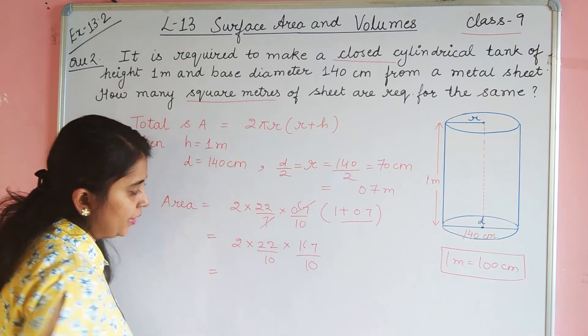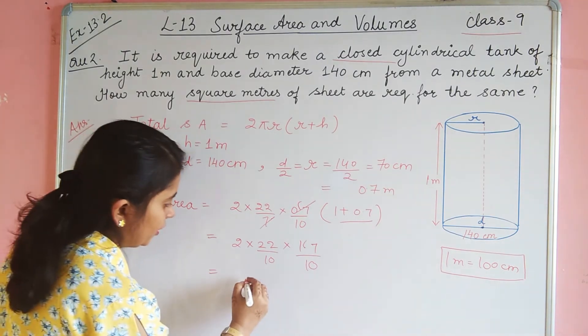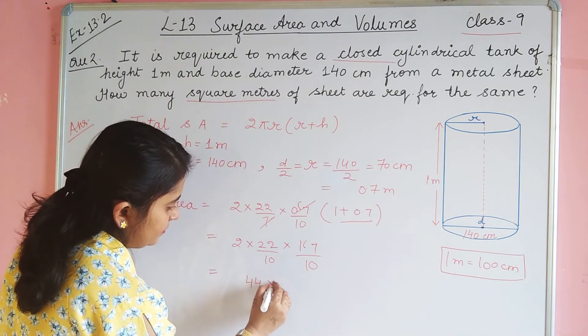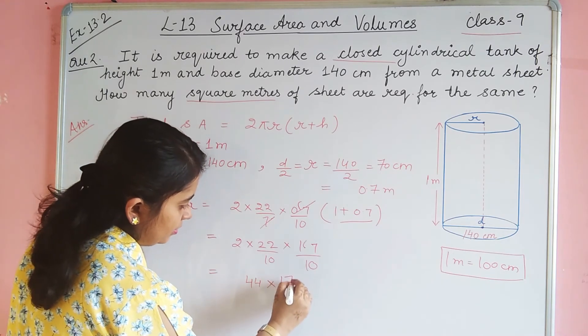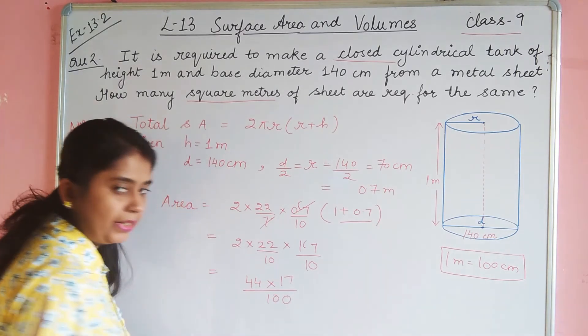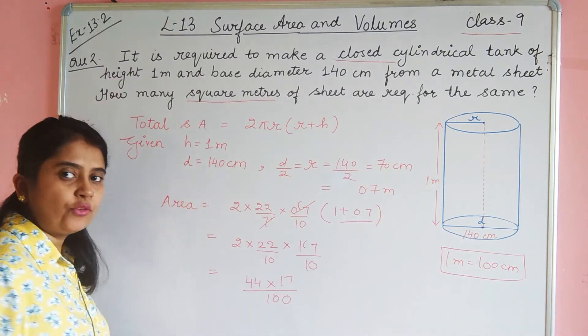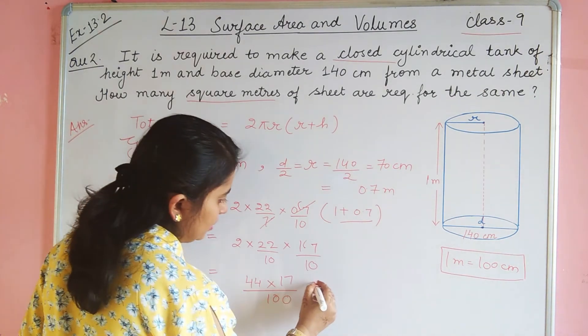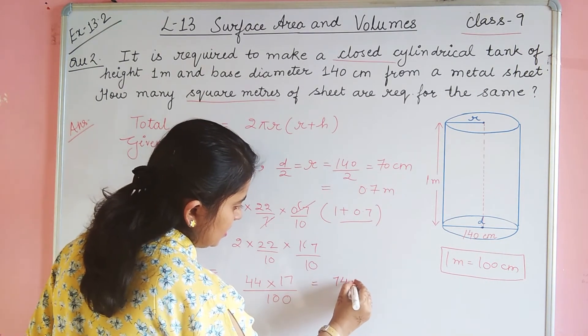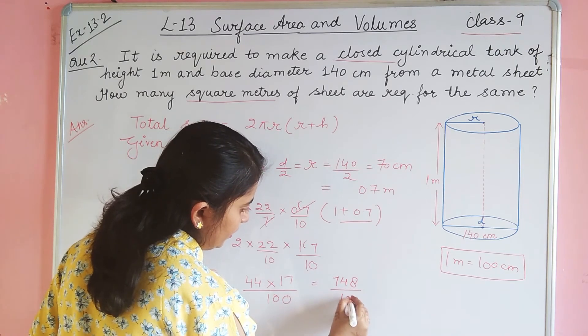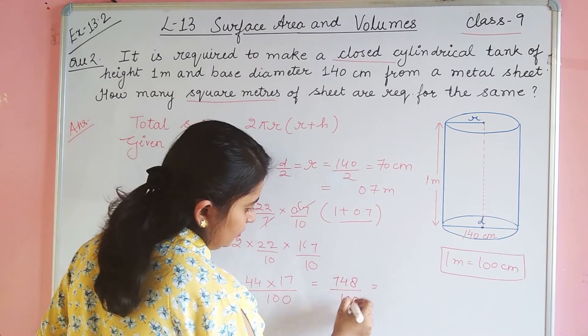So 22 multiplied by 2 is 44, this is 17 upon 100. जब multiply करेंगे 44 का 17 के साथ आपको मिलेगा 748 upon 100. 0 टाएंगे.